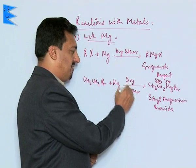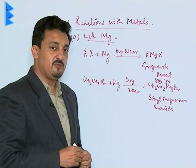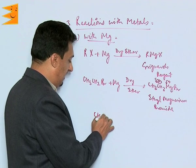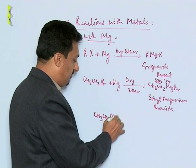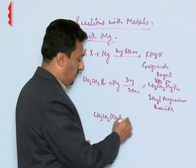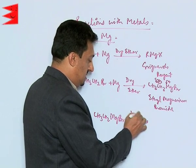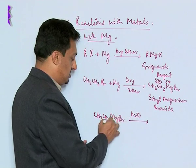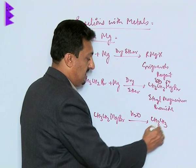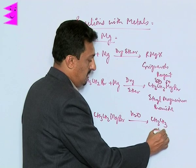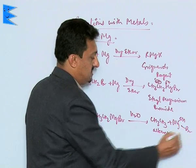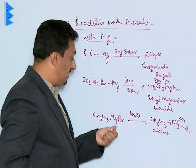We use dry ether as the medium, meaning it should be free from water. The reason is that the moment Grignard's reagents are exposed to any species having active hydrogen — like water — they react with it to form the corresponding alkane and magnesium hydroxy bromide.